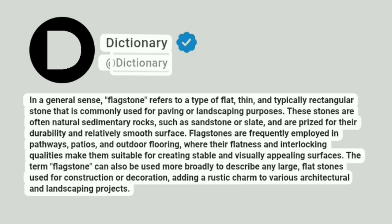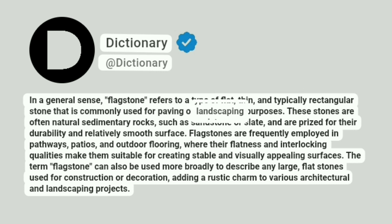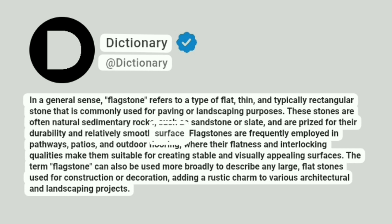Dictionary. Addictionary. In a general sense, flagstone refers to a type of flat, thin, and typically rectangular stone that is commonly used for paving or landscaping purposes. These stones are often natural sedimentary rocks, such as sandstone or slate, and are prized for their durability and relatively smooth surface.